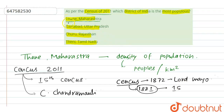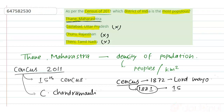The most populous district is Thane Maharashtra. Ghaziabad is wrong, Churu is wrong, and the other Thane option is also wrong. So the right answer is option 1: Thane Maharashtra.